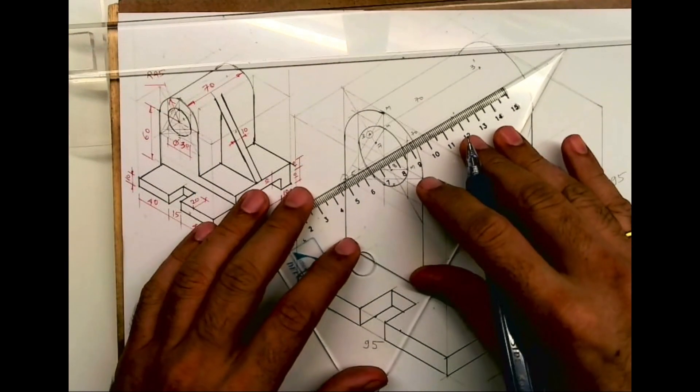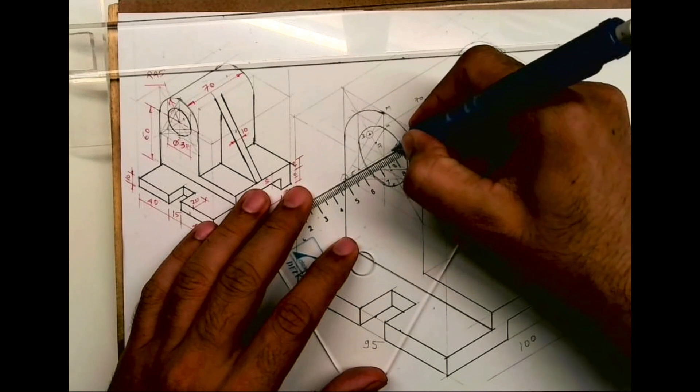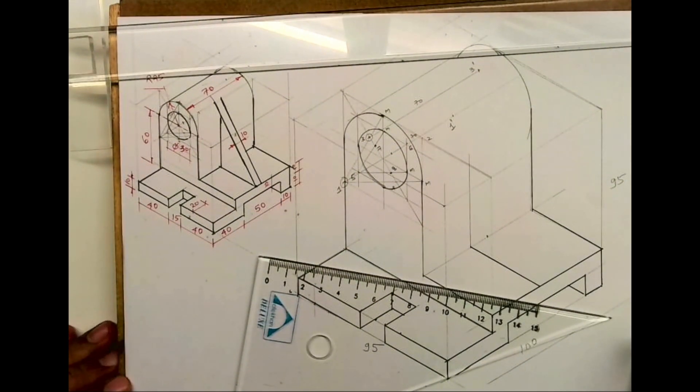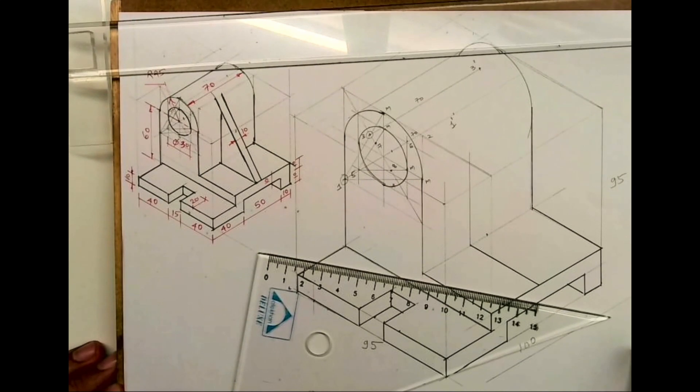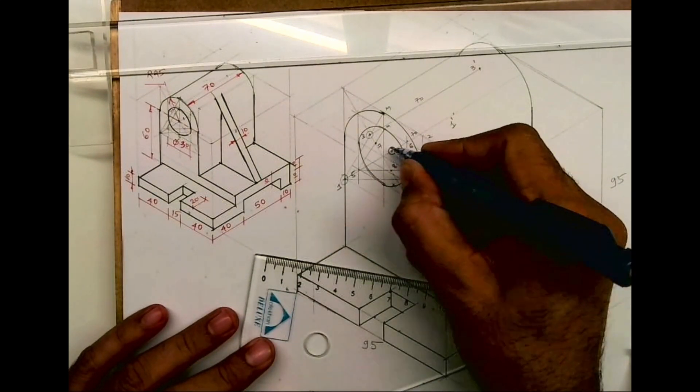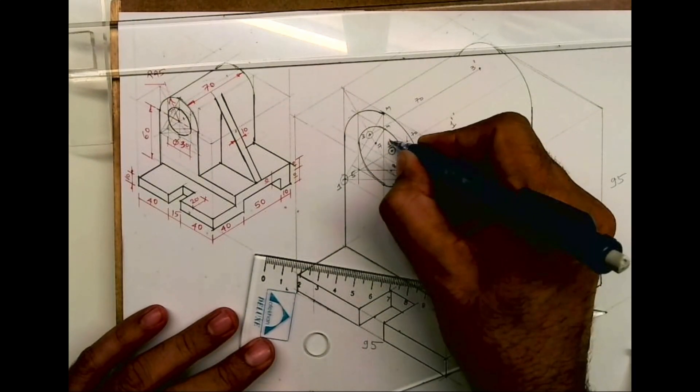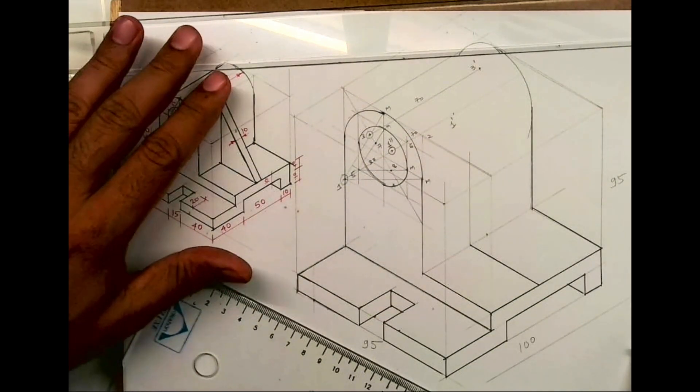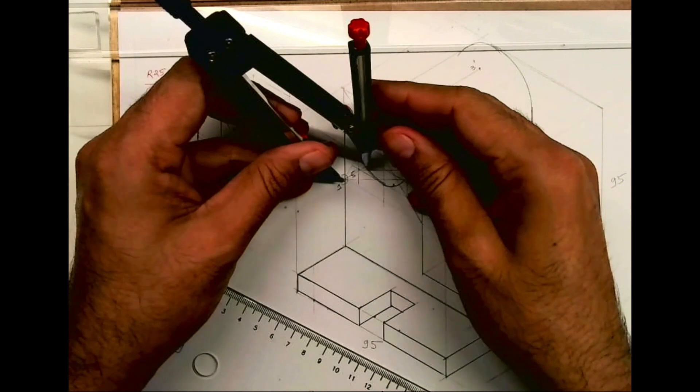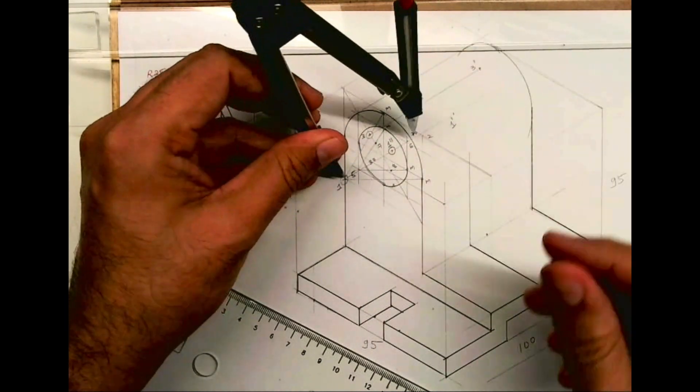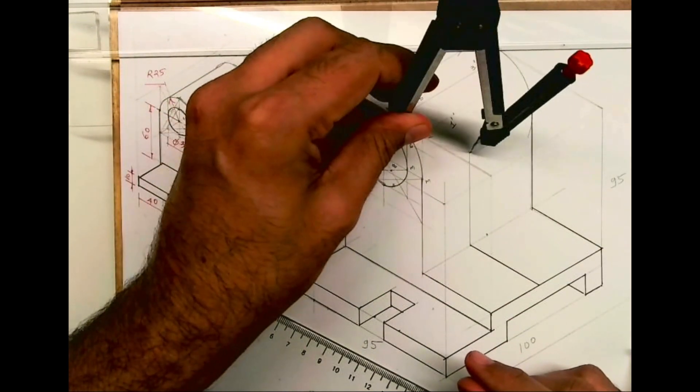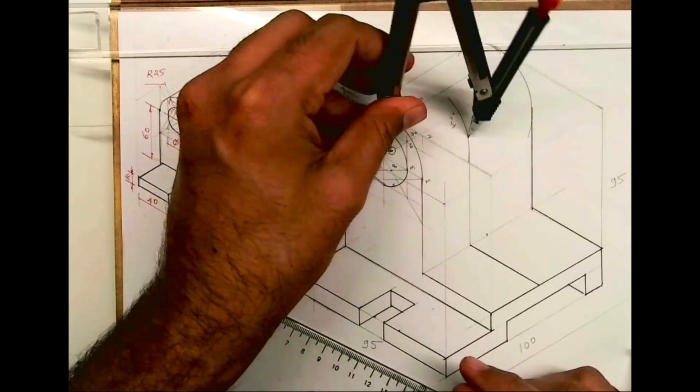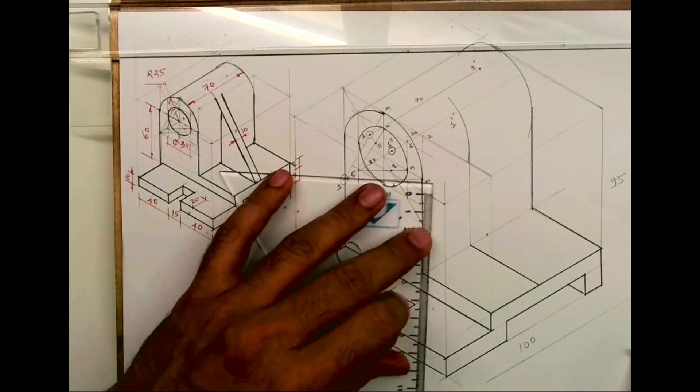Now how much is this behind? 30. So now from one you'll go behind by 30. You can mark that point as one double dash. This is one double dash. Go behind by 30. Take one to this radius and from one dash you draw arc. This is the tangent what you will get.